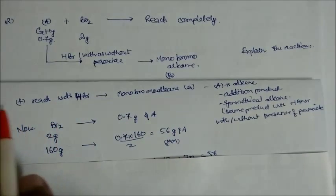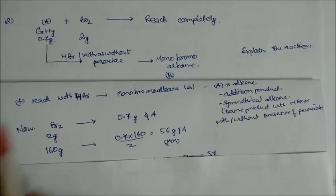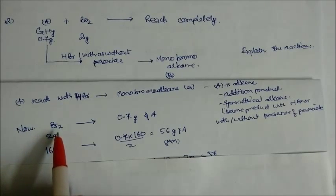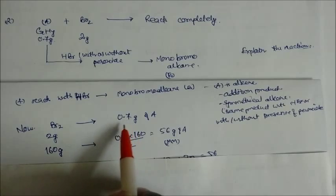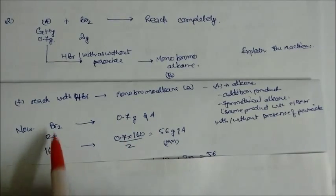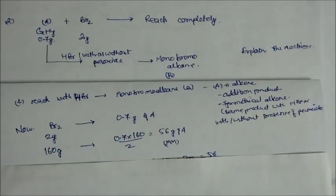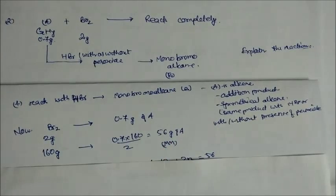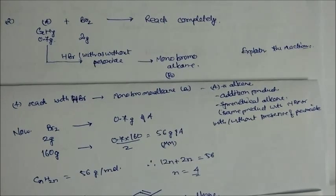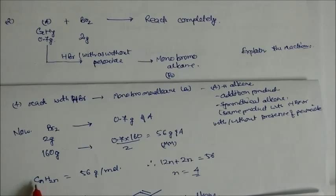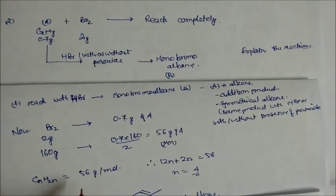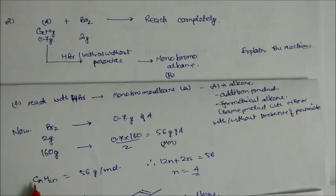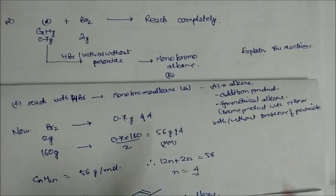Since A is a symmetrical alkene, from 2 grams of bromine reacting completely with 0.7 grams of A: if 160 grams of Br₂ reacts with 0.7 grams, we calculate the molar mass of A. Using the ratio, 56 grams per mole is the molar mass of A. Since it is an alkene, we write CₙH₂ₙ = 56 grams. So 12n + 2n = 56, giving n = 4.